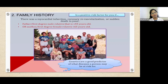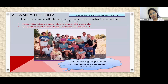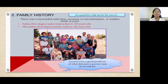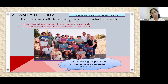Next is family history. A positive risk factor exists if there was a myocardial infarction, coronary revascularization, or sudden death in a first-degree male relative under 55 years old, or a first-degree female relative under 65 years old. Genetics are good predictors of what disease a person may be at risk for.